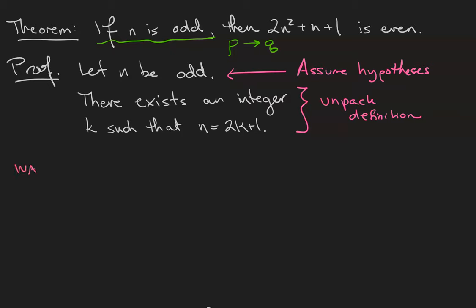It would be wrong of me to just plug in n equals 5 and show that 2 times 5 squared plus 5 plus 1 is an even number because I'm not talking about just the integer 5. I'm talking about any odd integer. So I want to be as general as possible.